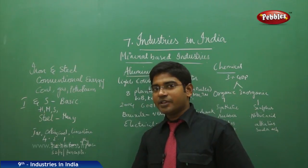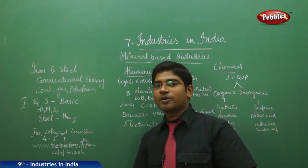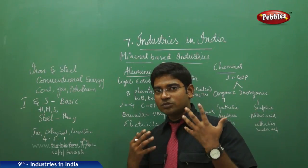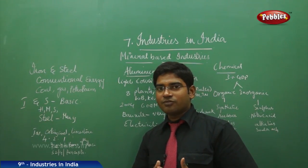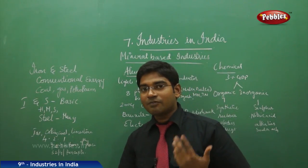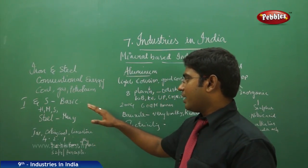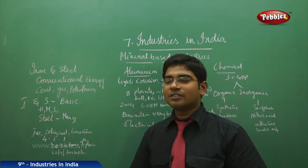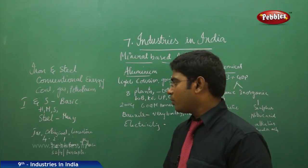Iron and steel is a basic industry from which you can make various kinds of products — electronic products, medical products, day-to-day use products like utensils — not only in one sector but in electronics, manufacturing, and everything. Even in airplane manufacturing industries, aluminum and iron are mixed together. So iron and steel industries are called basic industries because they are used as raw or basic sources for many other industries.